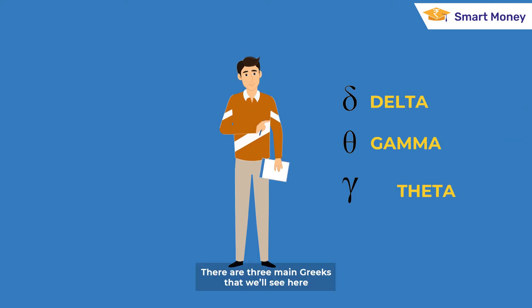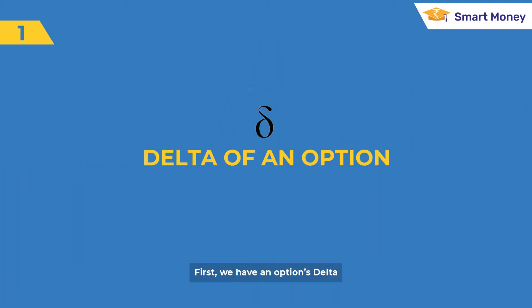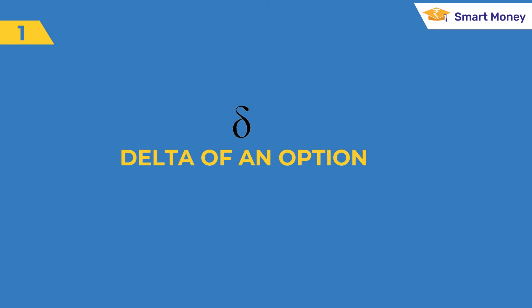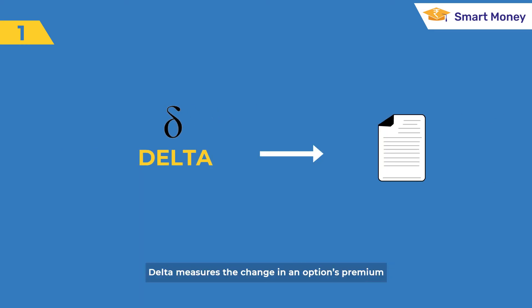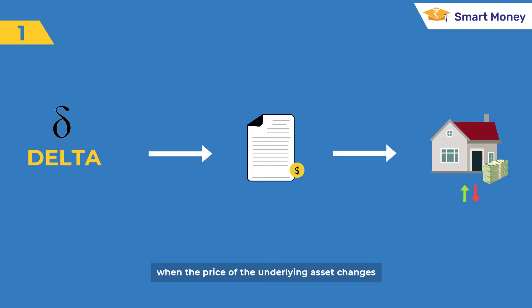There are three main Greeks that we'll see here. First, we'll have an options Delta. Delta measures the change in an options premium when the price of the underlying asset changes.